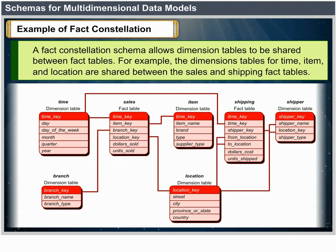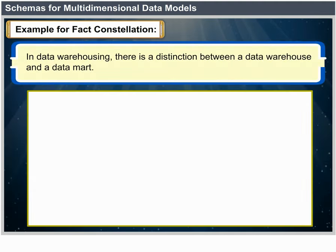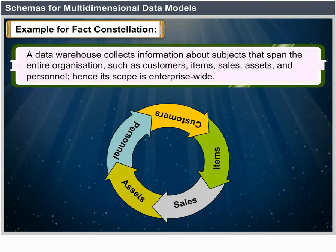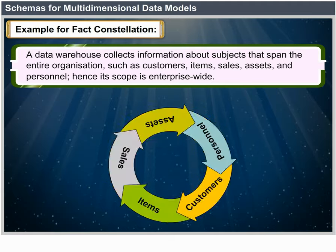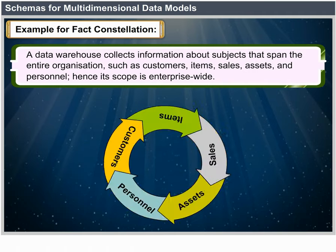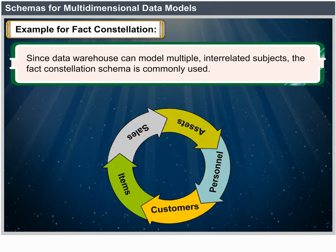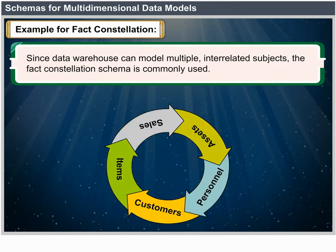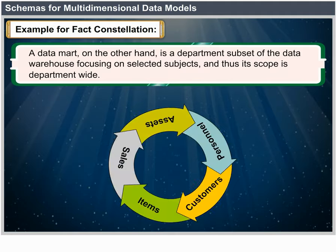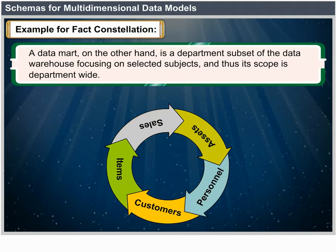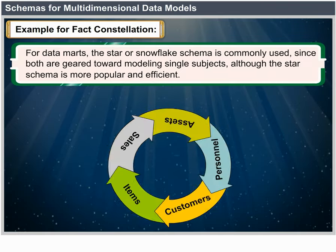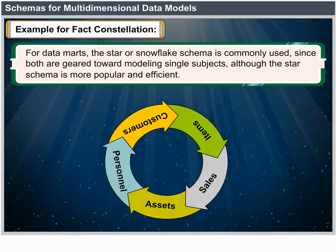In data warehousing, there is a distinction between a data warehouse and a data mart. A data warehouse collects information about subjects spanning the entire organization — customers, items, sales, assets and personnel — and its scope is enterprise-wide. For data warehouses, the fact constellation schema is commonly used since it can model multiple interrelated subjects. A data mart is a department subset of the data warehouse that focuses on selected subjects, so its scope is department-wide. For data marts, the star or snowflake schema is commonly used since both are geared toward modeling single subjects, though the star schema is more popular and efficient.